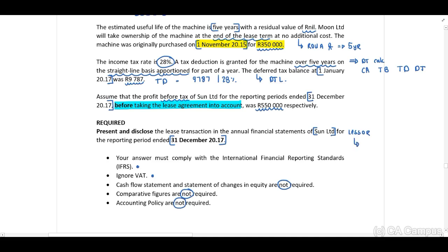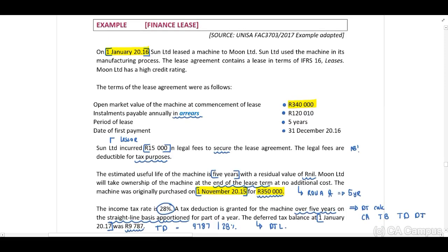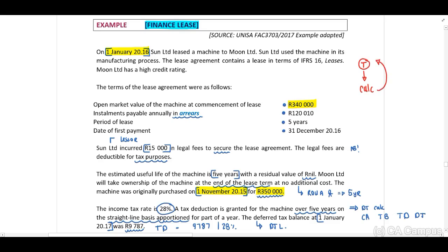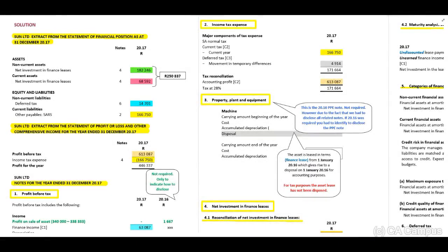We need to identify whether this is a finance lease or an operating lease, based on whether risks and rewards are transferred. Since they have indicated in the example that this is a finance lease, the recommendation is to first set up our template and then perform our calculations, transferring all the calculations to the template.